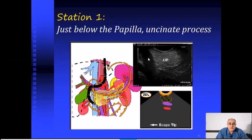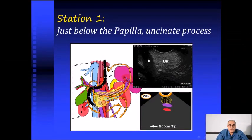We are starting the examination of station one, just below the papilla. The echo endoscope is just below the papilla, and here we perform upward deflection using the big wheel.